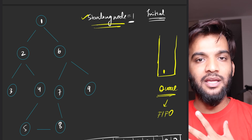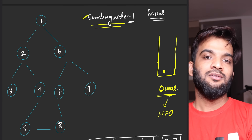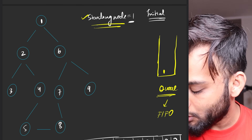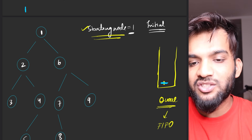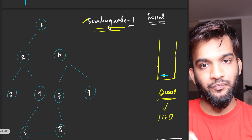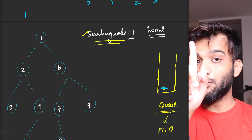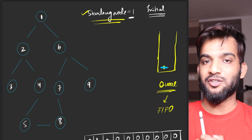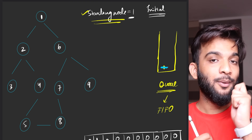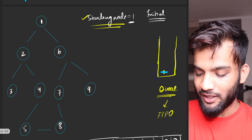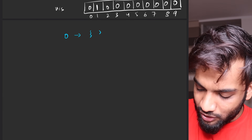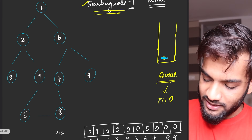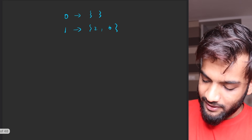The next step: keep taking elements out of the queue until the queue is empty. Whatever node comes out, you print it as part of the BFS traversal. For example, node 1 comes out first and is printed. Now, whatever you take out of the queue, you need to look at its neighbors — which were stored in the adjacency list.